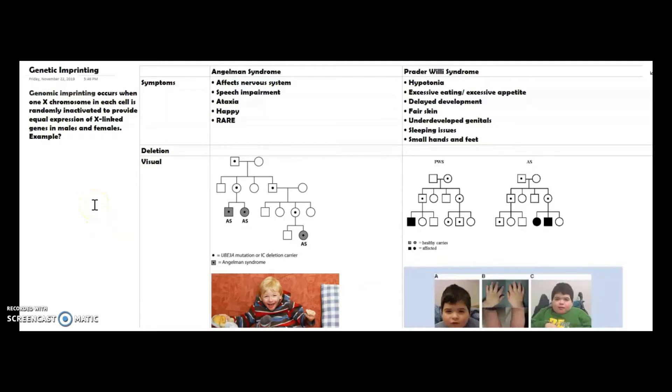We're going to go ahead and talk about Angelman syndrome and Prader-Willi syndrome. To start out with this, we're going to go through the symptoms, then talk about their pedigrees and how each are inherited, and then we'll go on to characteristics and exactly where these deletions occur.